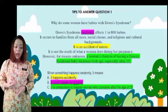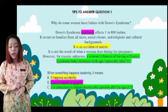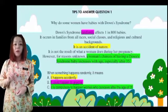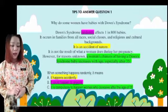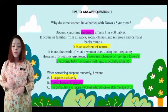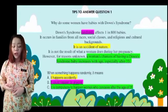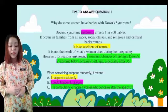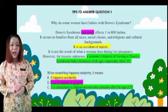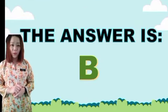Option C: it is compulsory to happen to women who conceive after the age of 35. The word 'compulsory' means it must happen. However, from the text, a woman's chance of having a Down syndrome baby increases with age, especially after 35. It says the chances increase, not that it is compulsory. Therefore, C is incorrect, and the only correct answer is B — it could happen to anyone.